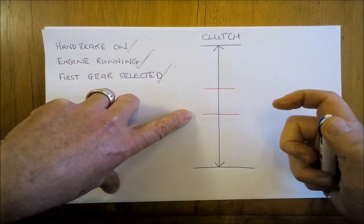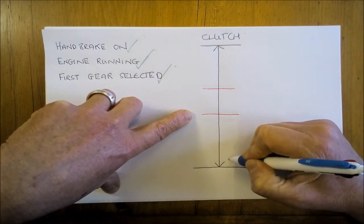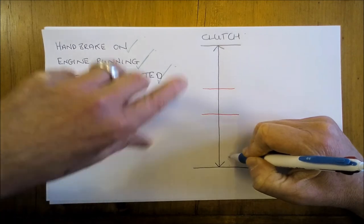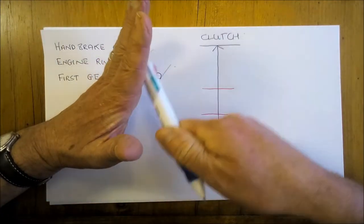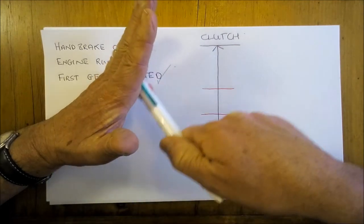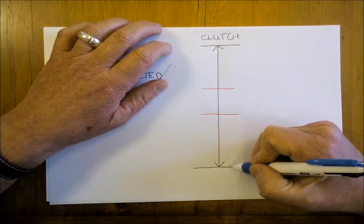Now what you're going to do is then very gently keep your heel on the floor if you can and allow the clutch pedal to slide along the ball of your foot, so your heel's on the floor and the clutch pedal itself is sliding on the ball of your foot.